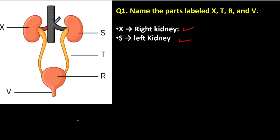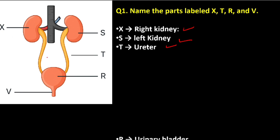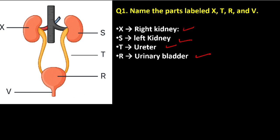Part T is called the ureter. R is called the urinary bladder. Then finally we have V — V is known as the urethra. So we are done with naming; we score those four marks.